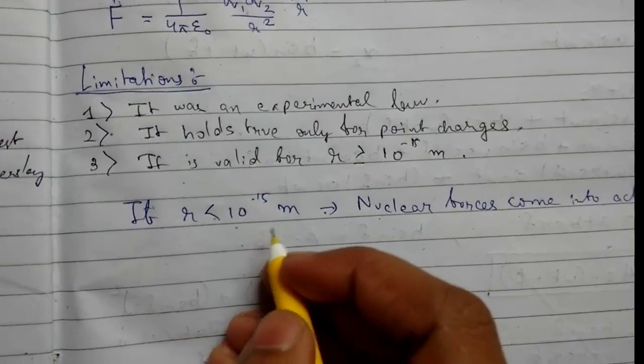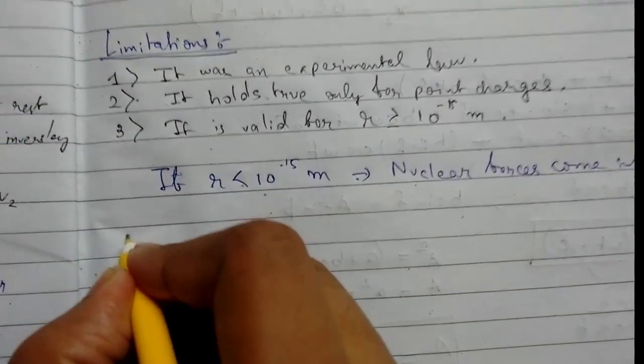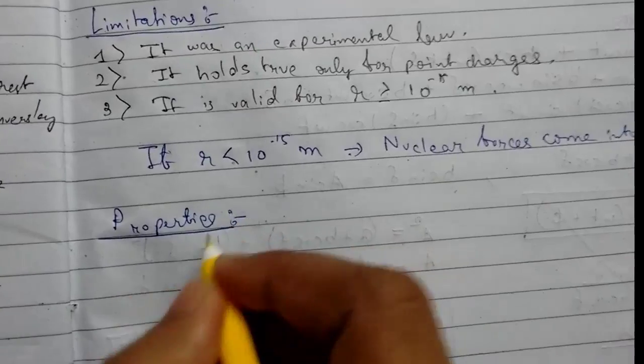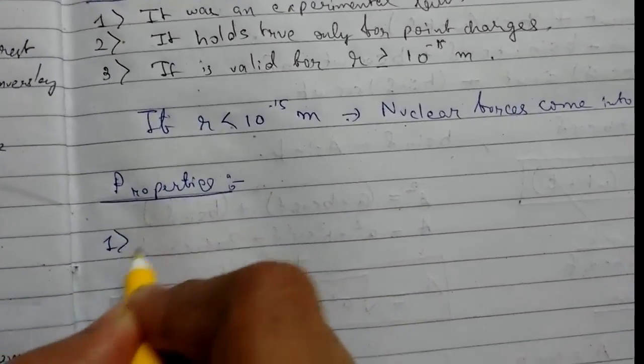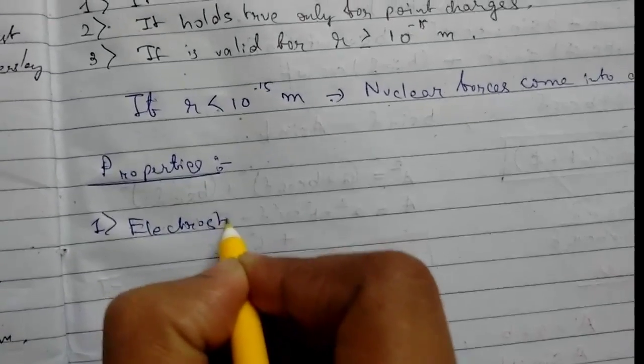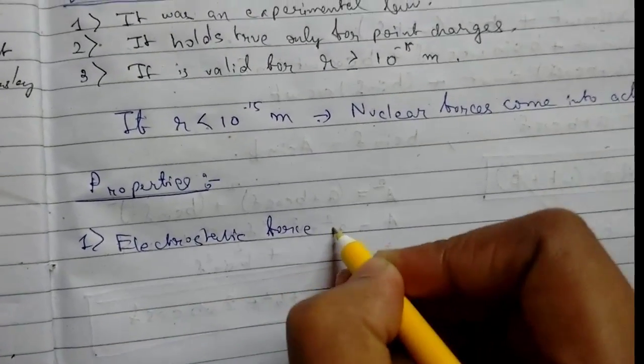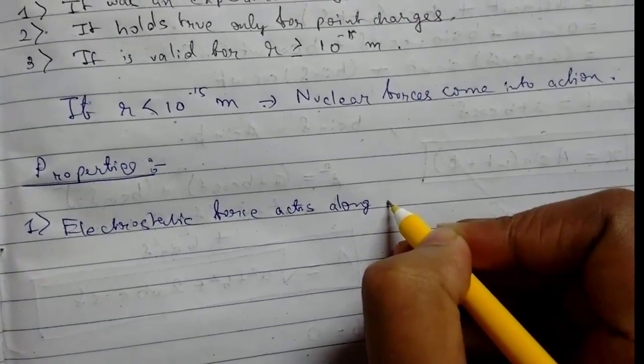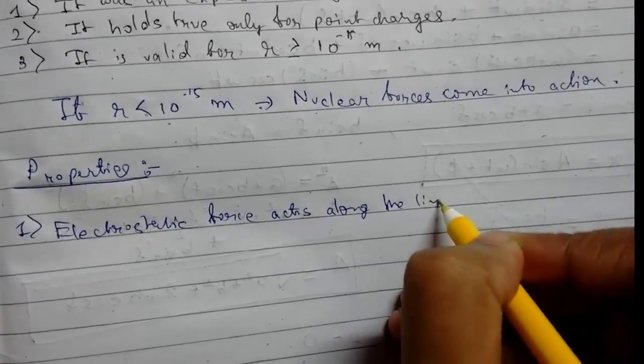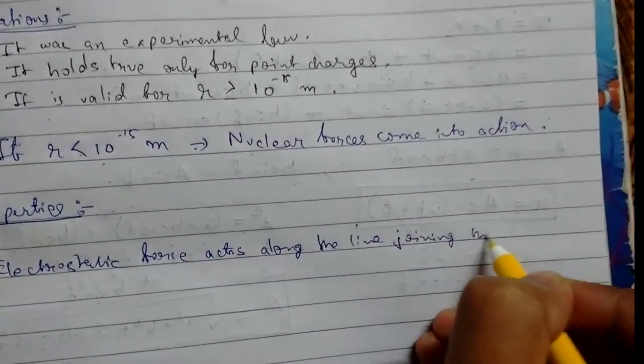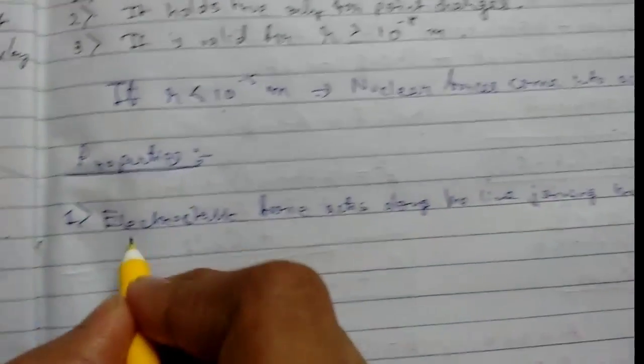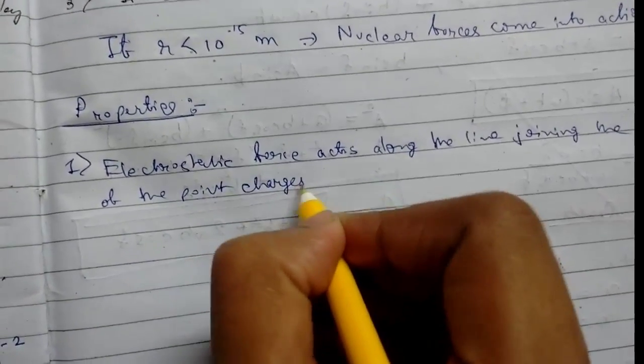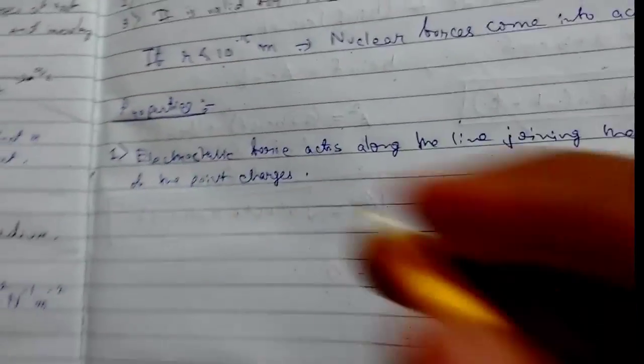Now there are some basic properties. Number one: electrostatic force acts along the line joining the center of the two point charges, so it is a central force.